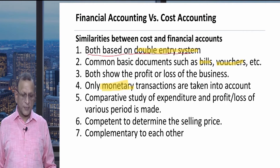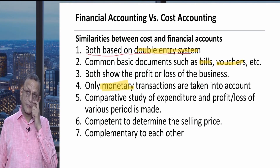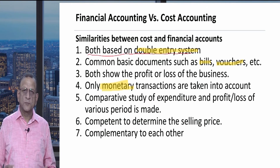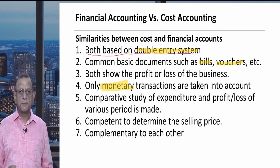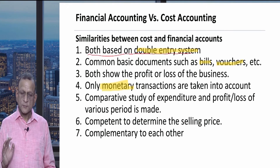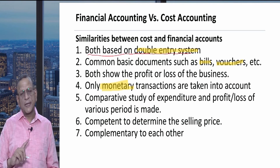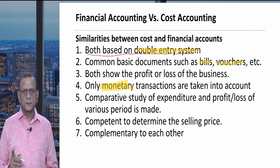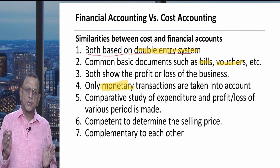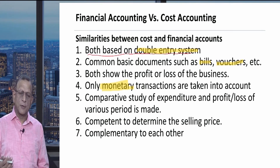The fifth point is that a comparative study of expenditure and profit or loss across various periods is made. In financial accounts, inter-firm and intra-firm comparisons are made. In cost accounts, we compare profits or losses not just during a period, but on a unit, department, product basis, and so on — we will discuss more about this later.